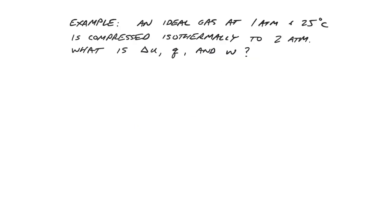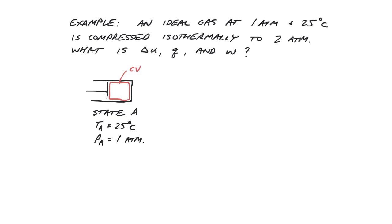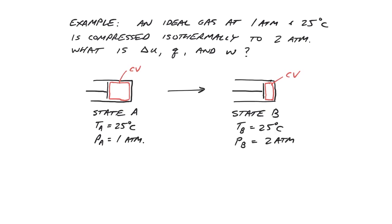As an example, imagine we have an ideal gas at 25 degrees C and 1 atmosphere. We compress the gas isothermally in a continuous state of equilibrium to 2 atmospheres. What is the net change of internal energy, and how much heat and work must we add or remove from the system to accomplish this transformation? Let's imagine the gas inside a closed piston-cylinder assembly. In the initial state A, at 25°C and 1 atmosphere, the gas will have a certain volume given by the ideal gas law. After we compress it to state B, 25°C and 2 atmospheres, it will have half the volume.